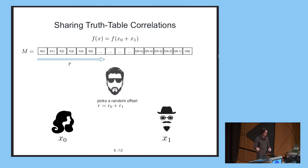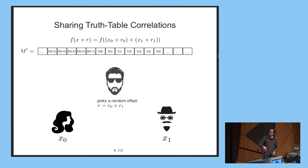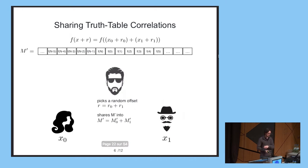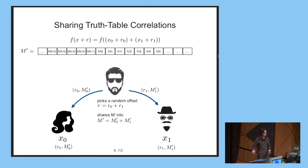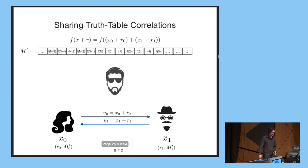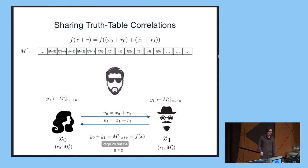The addition here denotes a bitwise XOR operation. So we have the shifted truth table M prime, and the trusted dealer will additionally share this shifted truth table in two parts, M prime 0 and M prime 1. Each party receives a share of the offset and a share of the shifted truth table. Using these pre-processed correlated random coins, securely evaluating the function f is extremely easy, because the parties simply exchange their inputs x0 and x1, masked by their share of the offset r. So u0 and u1 form shares of x plus r.